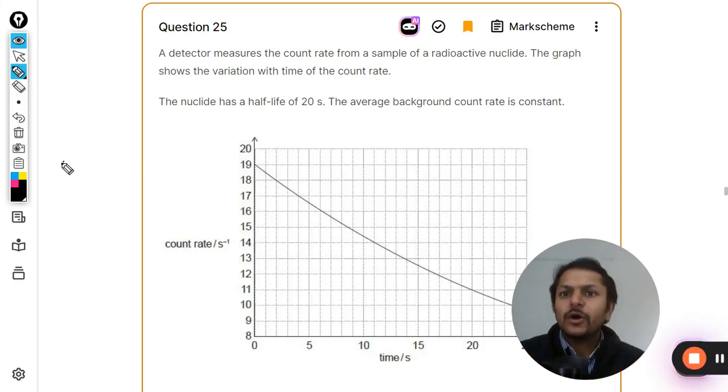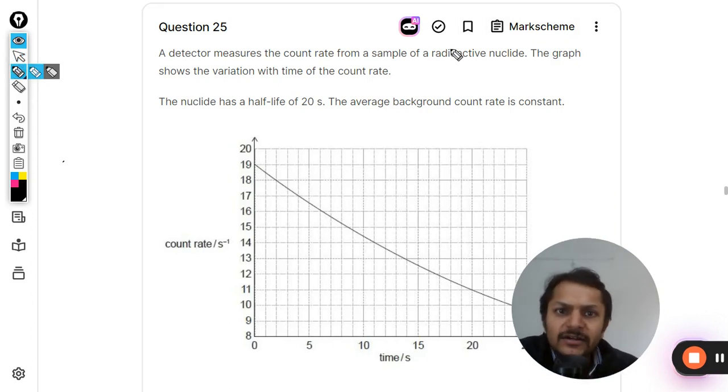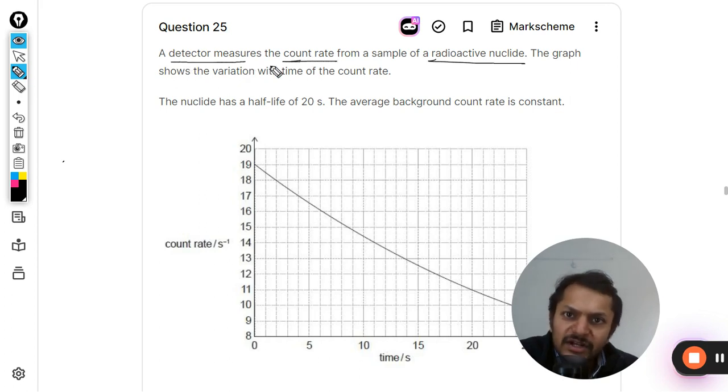Let us see what is there in this question. A detector measures the count rate from a sample of radioactive nuclei. The graph shows the variation with time t of the count rate.